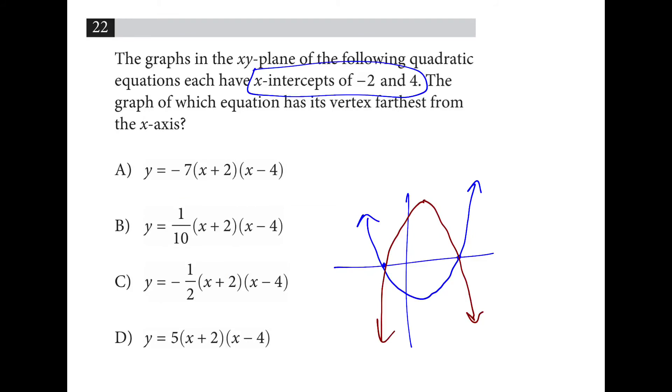We have a quadratic with x-intercepts of negative 2 and 4. We don't know if it opens up or down, but it'll look like one of these two. So we looked for the a value to determine how close the vertex is to the axis. If it's a fraction, it's going to flatten the curve out, and it's going to be closer to the x-axis. The bigger the number is, the farther away from the axis it will be.